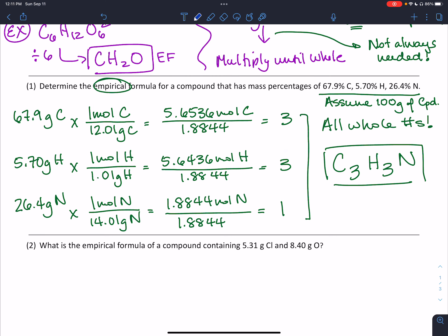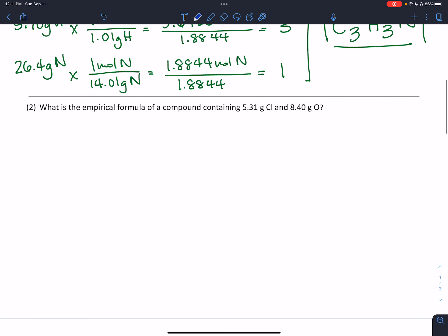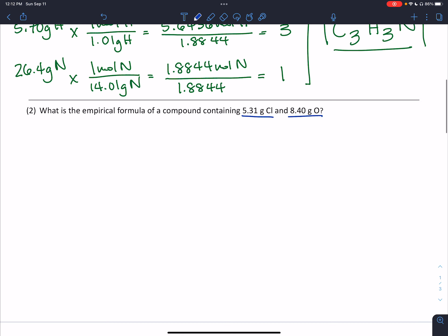Let's try one more. We're going to slide down to this bottom problem. What is the empirical formula of a compound that contains 5.31 grams of chlorine and 8.40 grams of oxygen? For this problem, I'm already at the grams, so I don't need the first step. I'm just going to start with the second step: mass to moles.